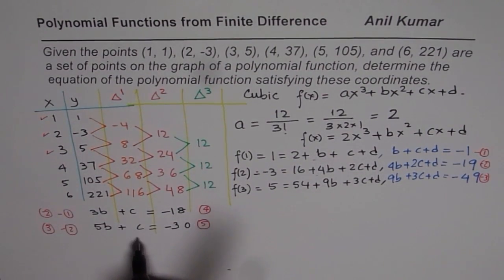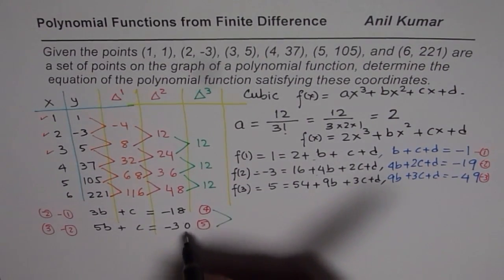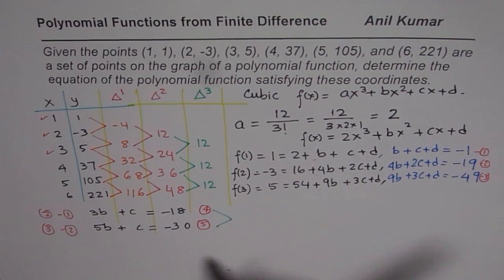Now we have 2 variables, b and c, and 2 equations. We can take 5 minus 4 to find the value of c. So we will do 5 minus 4. So when I do 5 minus 4, what do I get?